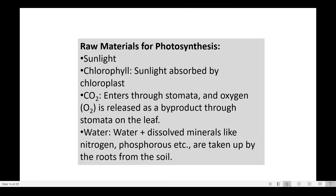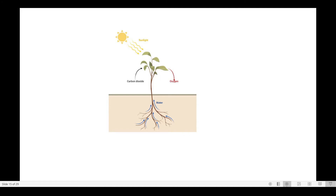The raw materials for photosynthesis are sunlight, chlorophyll, carbon dioxide, and water. The plant draws water from the soil through its roots and takes carbon dioxide from the atmosphere through the stomata. The chlorophyll molecules get excited in the presence of sunlight, and using these raw materials — sunlight, carbon dioxide, and water — the plant makes glucose and releases oxygen, which exits through the stomata.